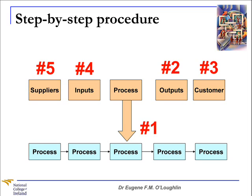Step number two is to identify the outputs of the process — we look at the outputs before we look at the inputs. Step number three is that we identify the customers that will receive those outputs. Step number four, we identify the inputs required for the process to function properly. And finally, step five, we identify the suppliers of the inputs. We use a SIPOC diagram to represent one process; if you have two or more processes, use a separate SIPOC diagram for each.